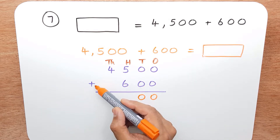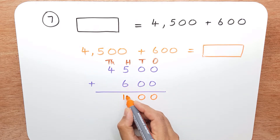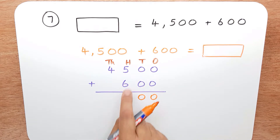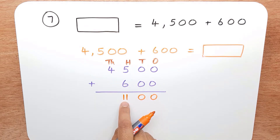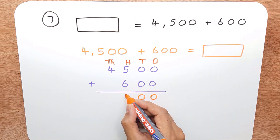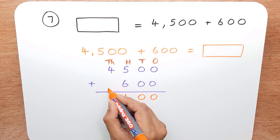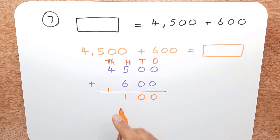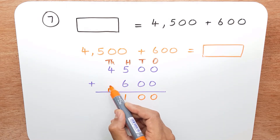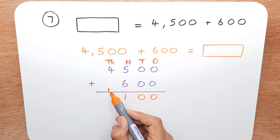Five add six is eleven. Now we can't put two digits in one column, so we put the one here and carry the one over to the next column. Now we have four add nothing — there's nothing here — so it's four add nothing, which is four, add the one we've carried over, which makes it five.